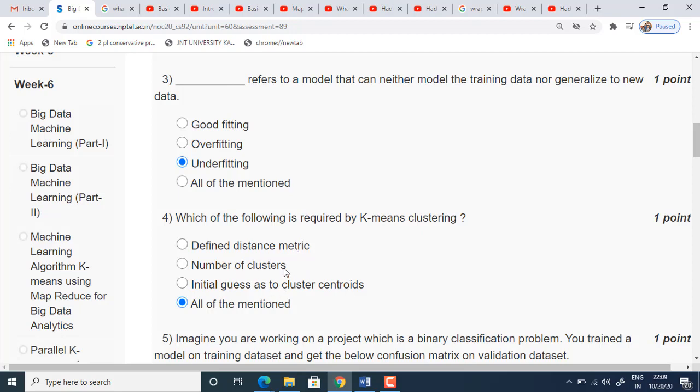With these three only, we can solve any k-means clustering problems. So these are all the three parameters which are required for k-means clustering algorithm. So the answer is all of the mentioned.